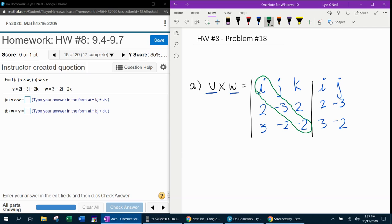And we're going to multiply down on the diagonal. Negative 2 times negative 3 times I. That will give us 6I. Next diagonal over, 3 times 2 times J. Plus 6J. And then the next diagonal over, negative 2 times 2 times K. Negative 4K.